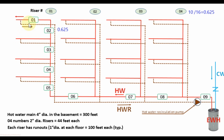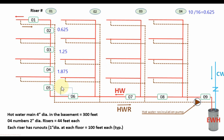For pipe segments 1 and 2, we need 0.625 GPM. For pipe segment 3, there are 2 branches connected before it, so the GPM is 1.25. For pipe segment 4, with 3 branches before it, GPM is 1.875. For pipe segments 5 and 6, with 4 branches before them, the GPM is 2.5.